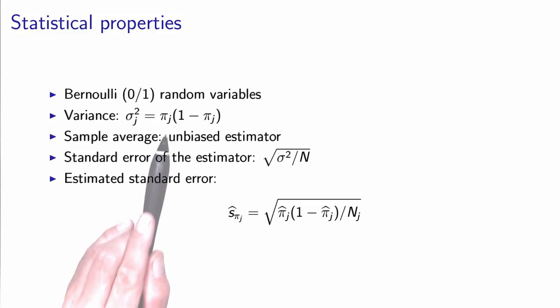Of course we don't know the true value of the parameter, so we replace it by the estimated value, pi hat j, and we divide by the number of people. The standard error for the parameters associated with age category j, is calculated based on the number of people in this category. n_j is equal to the number of people in the age category j.